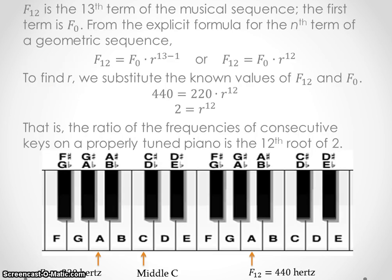All right. So to find this R that we're looking for, this ratio in between all these keys, we have to use a few values that we already have established here. So F_12 is the 13th term of the musical sequence. The first term is F_0. That's how we got 13. You had to count 0 as well.